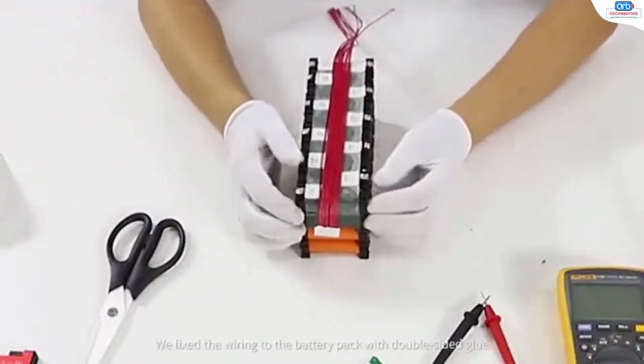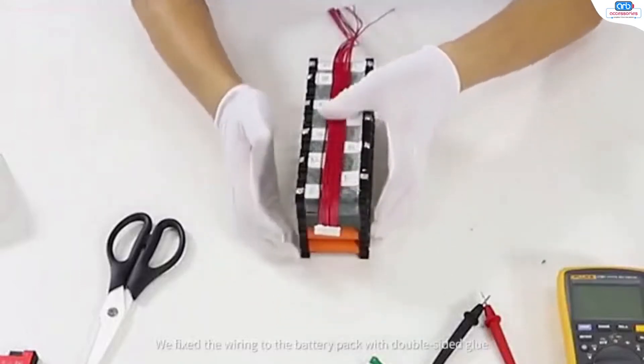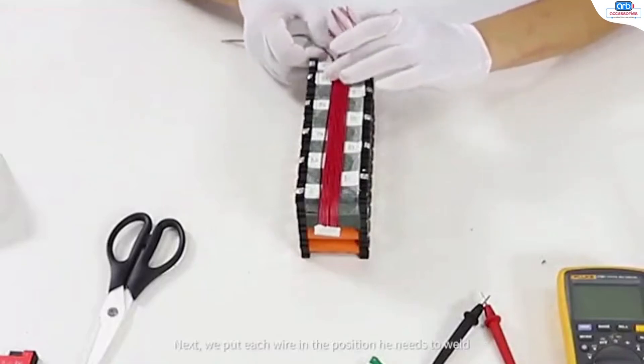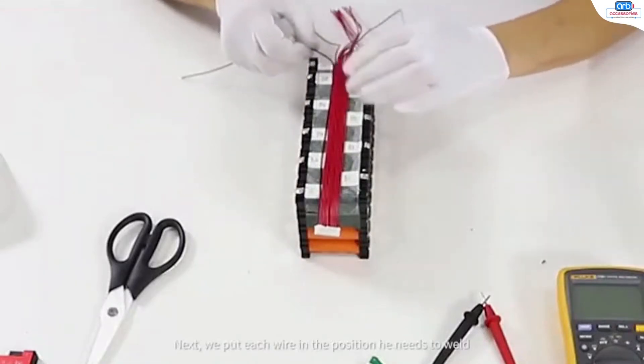We fixed the wiring to the battery pack with double-sided glue. Next, we put each wire in the position he needs to weld.